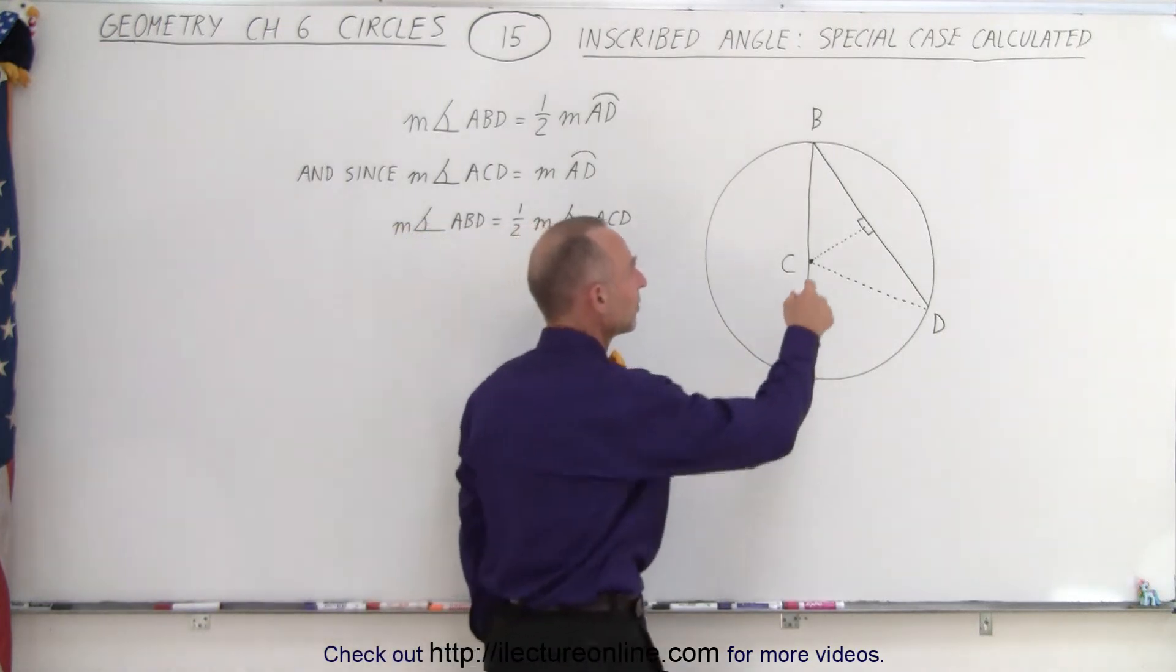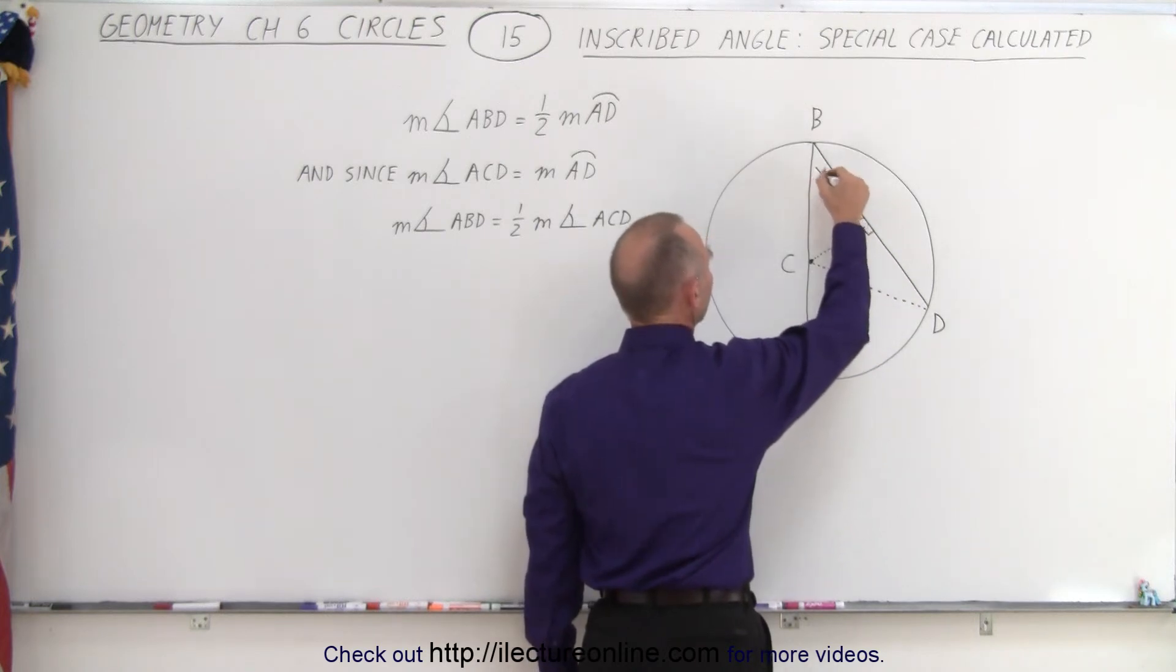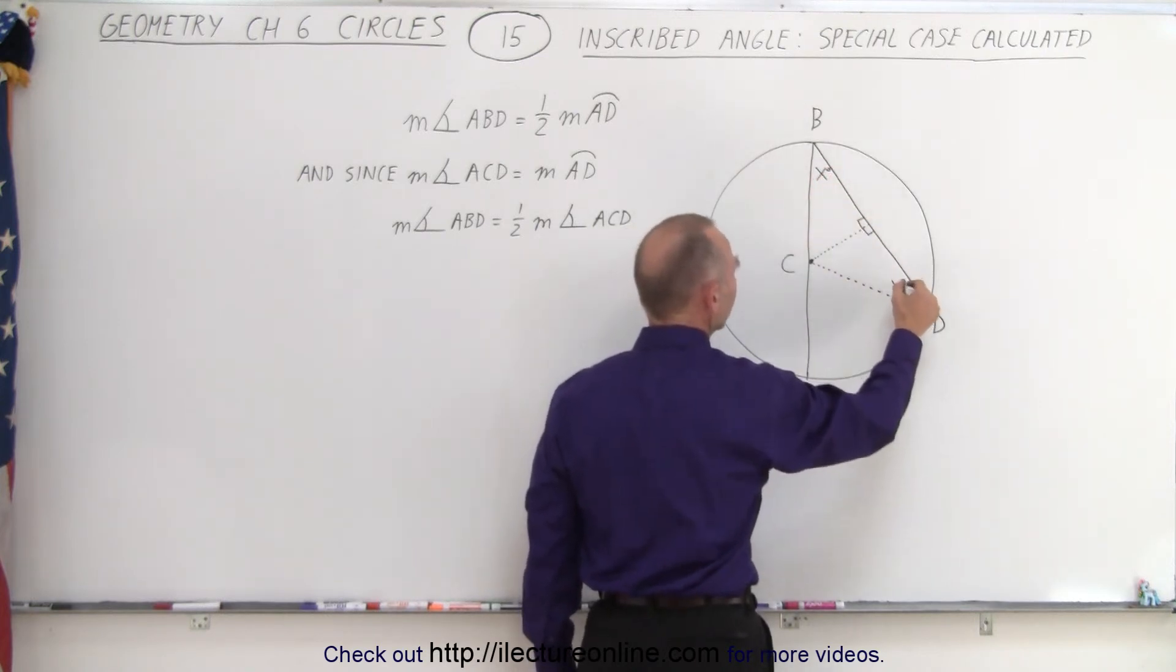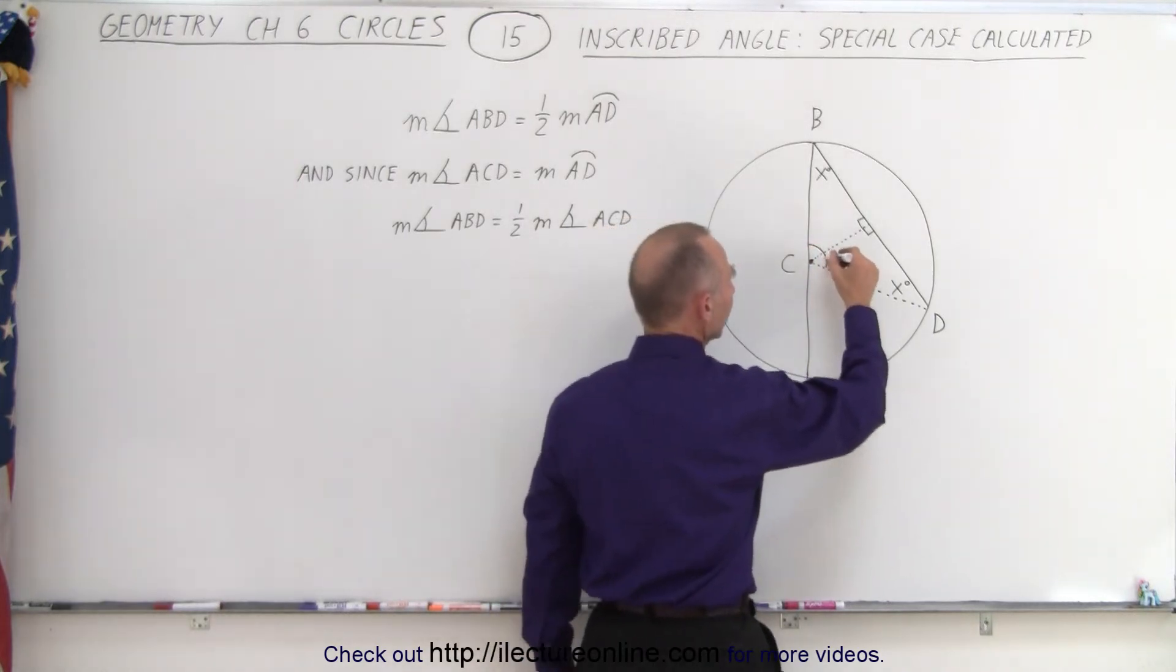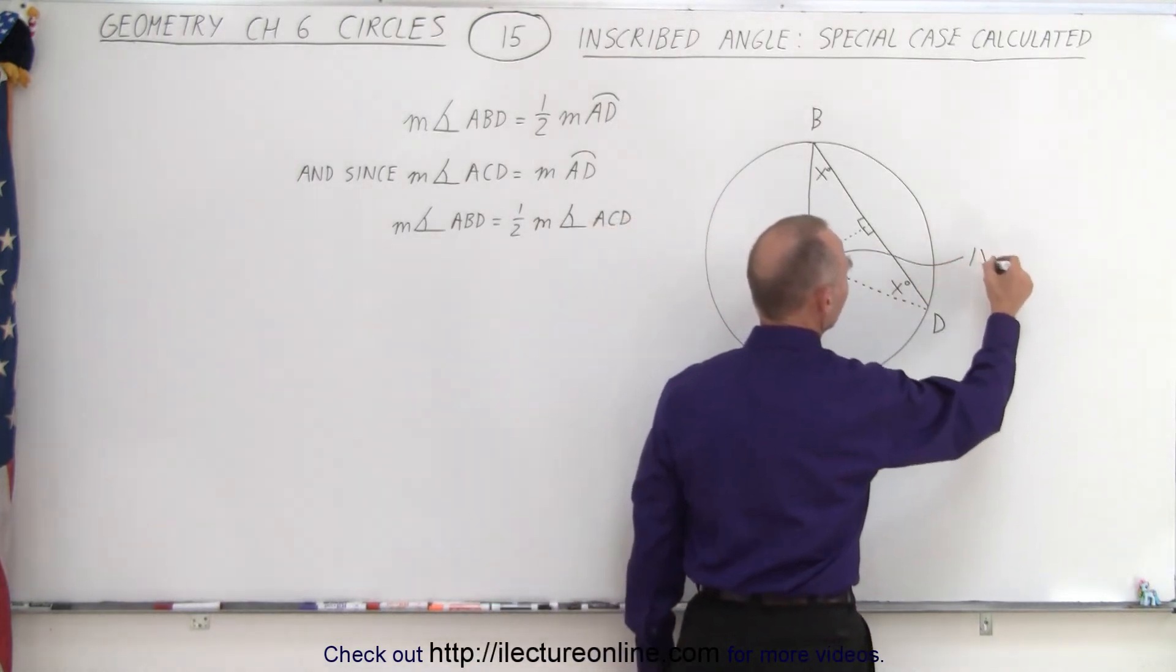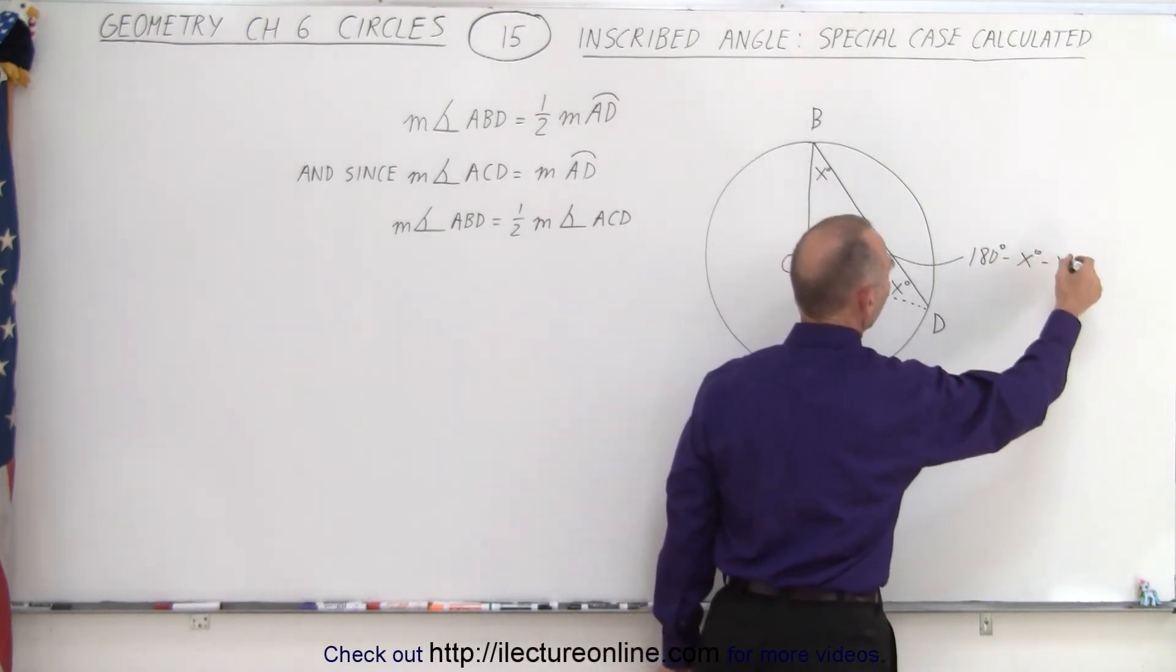So since those are the same that means that this angle here must equal this angle over here and let's call that angle x degrees and this angle x degrees over there. If that's the case then this angle right here, let's put a line over here that is equal to 180 degrees minus x degrees minus x degrees.